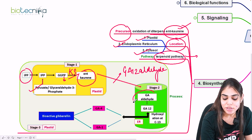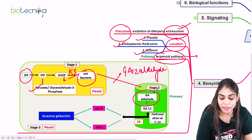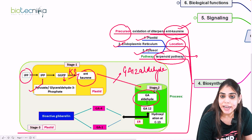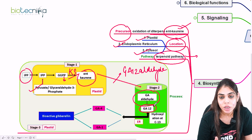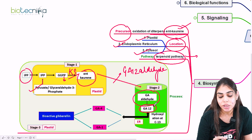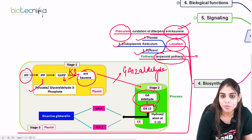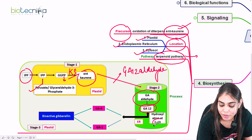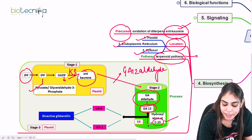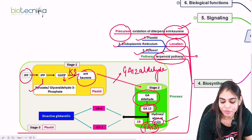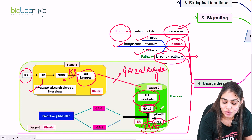In the ER, this GA12-aldehyde has its aldehyde group removed, resulting in the formation of GA12. Here happens the first hydroxylation — we have seen two hydroxyl groups are added, and the first hydroxylation reaction occurs at carbon-13. So GA12 is converted into GA53. Now we have two different forms of gibberellin: GA12 and GA53.